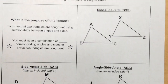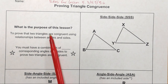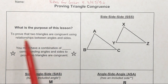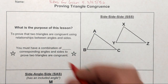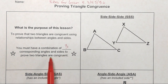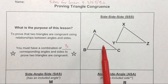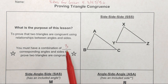Ultimately, the whole point of this lesson is to prove that two triangles are congruent using relationships between angles and sides. You must have a combination of three corresponding angles and sides to prove two triangles are congruent, and it can't just be any combination — there are these five specific ways. If you understand these elements and pay attention to these notes, you'll have a much better understanding. It has to be a certain situation for these triangles to be proved congruent to each other.